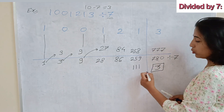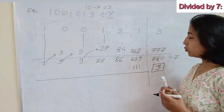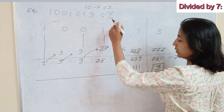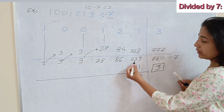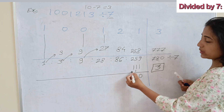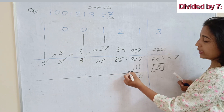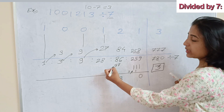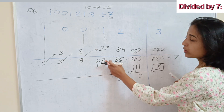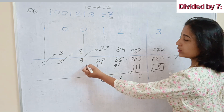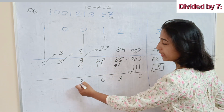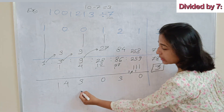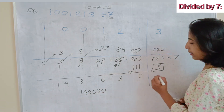Now add this quotient 113 to the quotient part. Since every position needs a single digit, carry digits forward. Working through the additions with carries: 9 plus 1 is 10 (carry 1); 5 plus 2 is 7; continuing the carry additions through all positions gives the final quotient as 143030 and remainder 3.